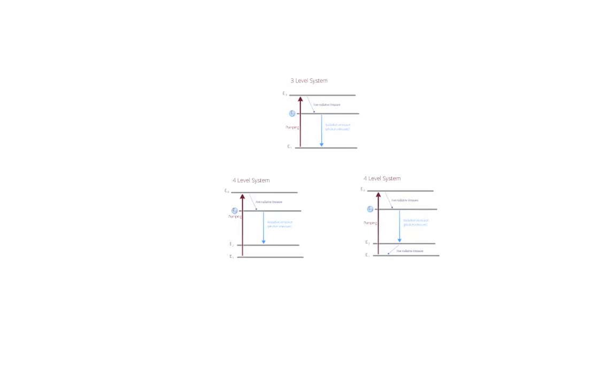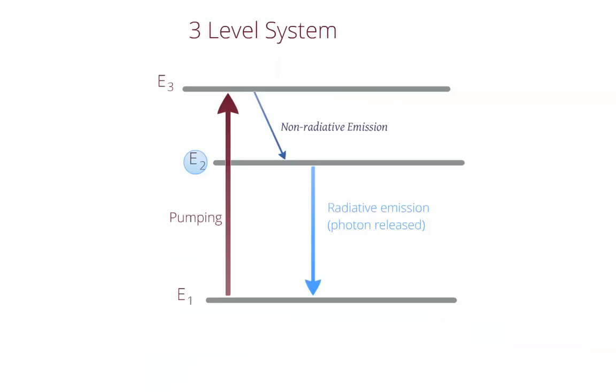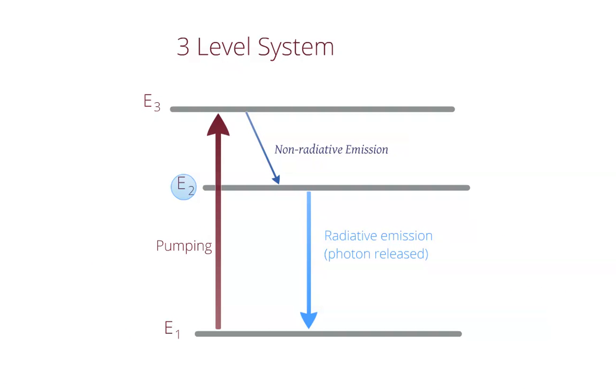One way to solve this is to use a three-level system. The atoms are pumped to an even higher excited state E3, and then they very rapidly decay down to the lower level E2. As the lasing transition between E2 and E1 happens on a much lower timescale than the decay to E2, the atoms accumulate in the middle level, allowing a population inversion to occur. This then allows lasing to occur in equilibrium.